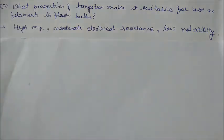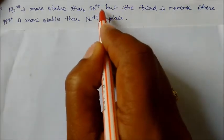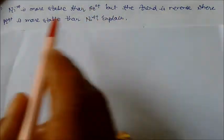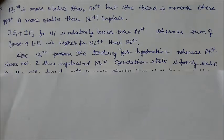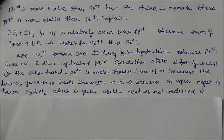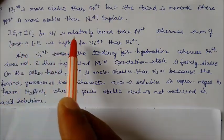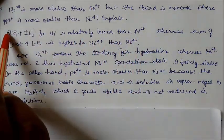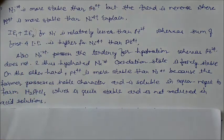Ni2+ is more stable than Pt2+ but the trend is reversed where Pt4+ is more stable than the Ni4+. Explain. The I1 and I2 for nickel is relatively lesser than Pt2+. So ionization energy 1 plus 2 for nickel is very low whereas the sum of the first four ionization energy is higher for Ni4+ than Pt4+.